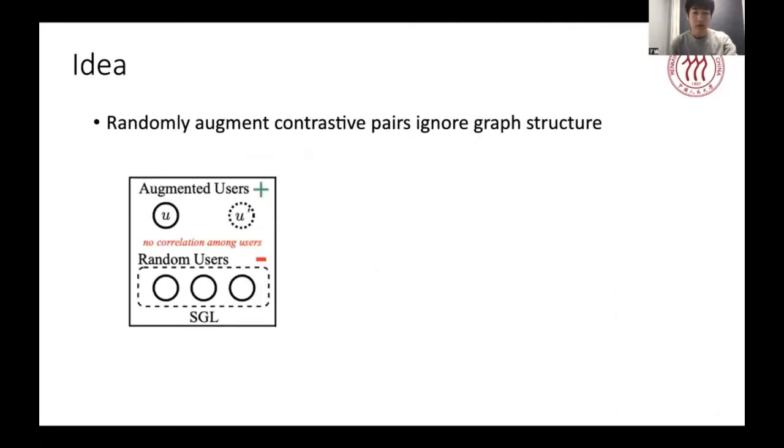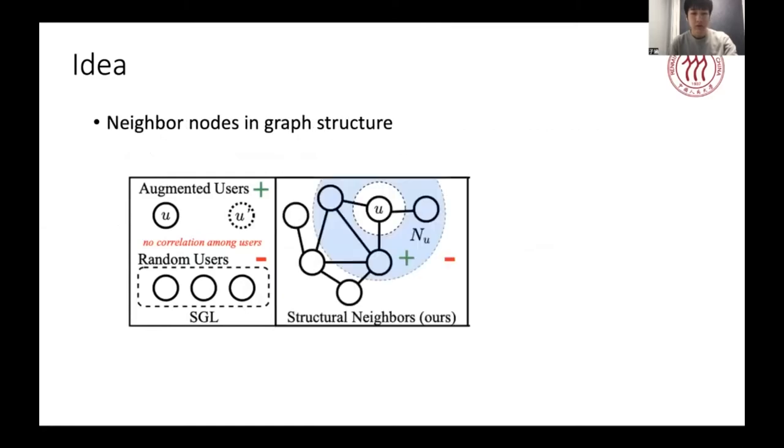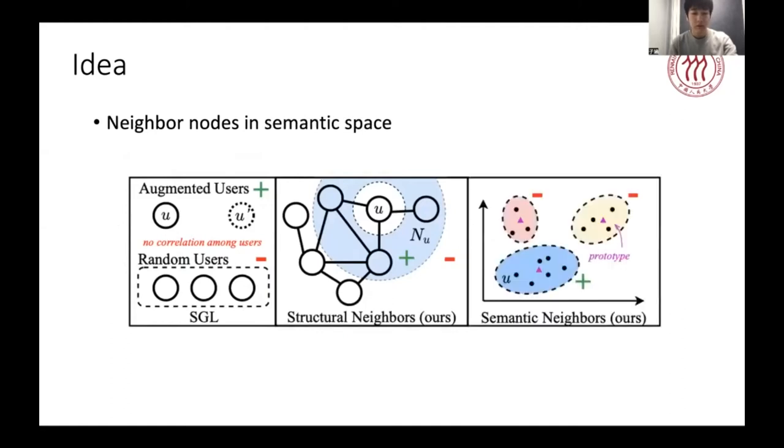As we mentioned above, prior work conducts contrastive learning between a node and the augmented nodes, neglecting the graph structure that links different nodes. Therefore, a straightforward consideration is to additionally conduct contrastive learning with structural neighbors. Structural neighbors refers to structurally connected neighbors by high-order paths. However, structural neighbors would be severely disturbed by some noisy edges. So we additionally consider those semantically similar nodes, which we named as semantic neighbors. They can be found in the representation space.